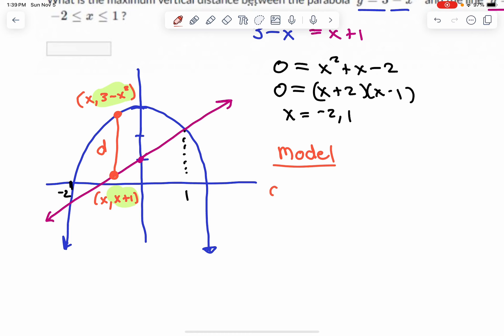So I can now go right to d of x, my model. The distance between the two points, d of x, equals 3 minus x squared, minus x plus 1. Which I'll clean up a little bit. So this becomes 3 minus x squared, minus x minus 1, or negative x squared, minus x plus 2. So there's a model for the distance.